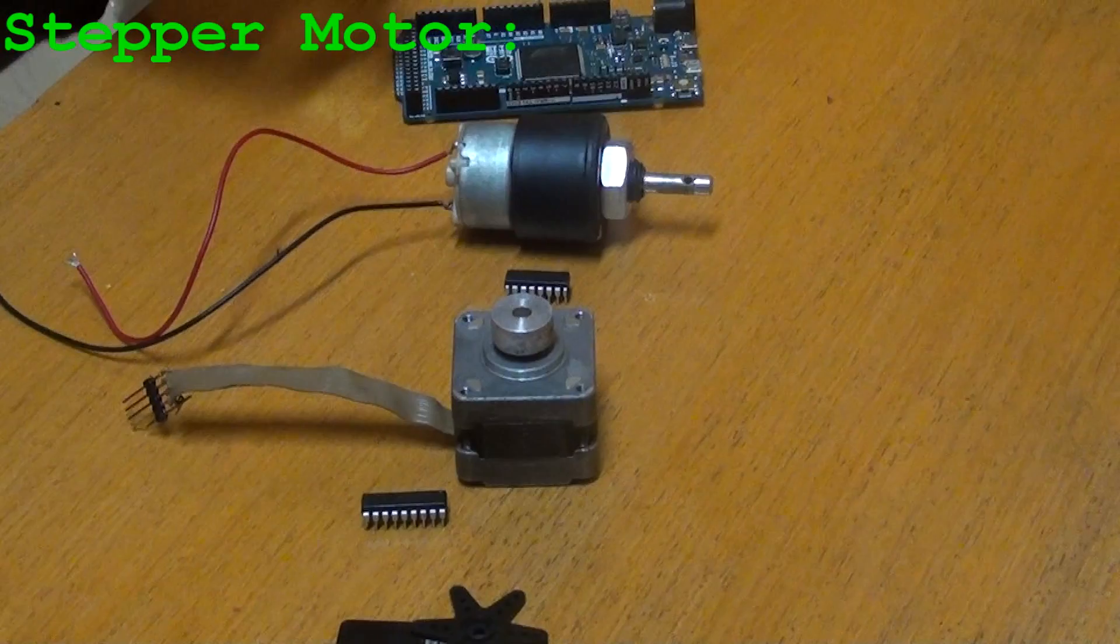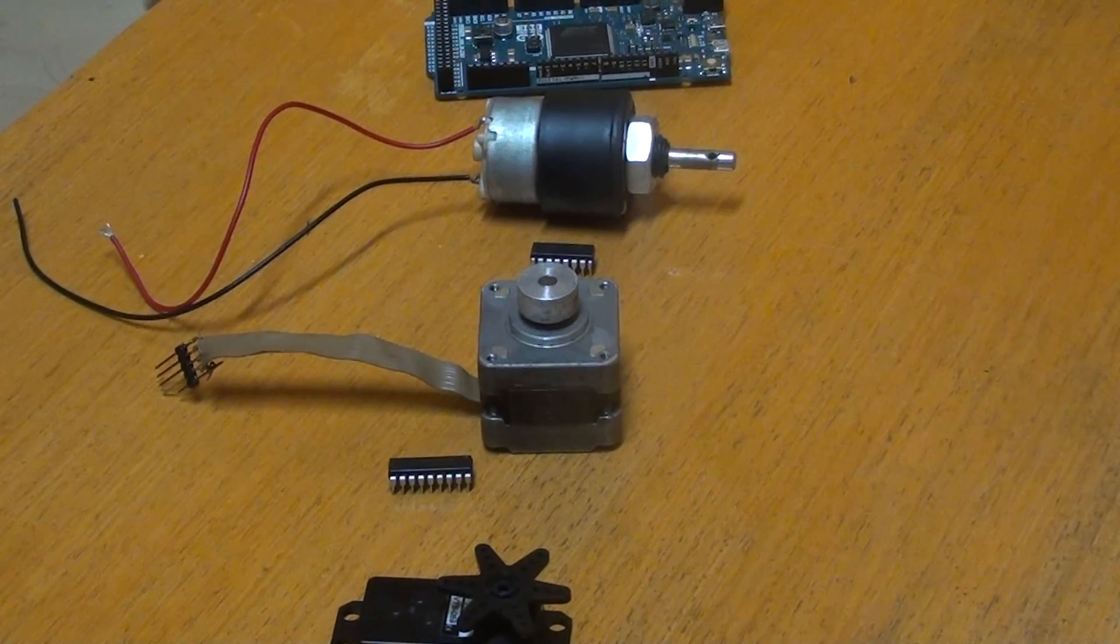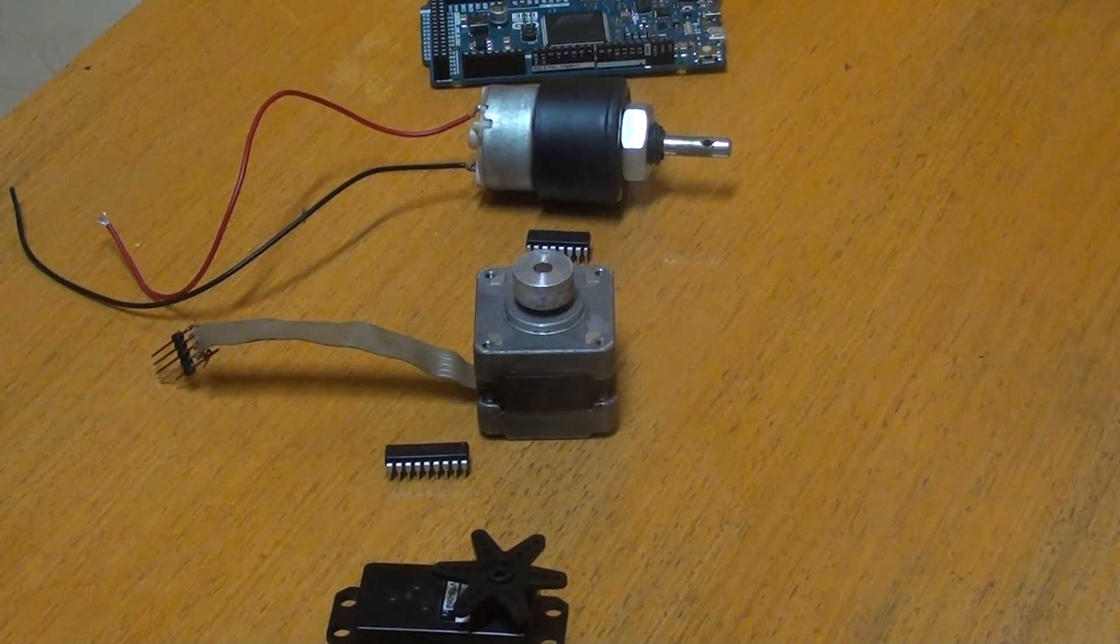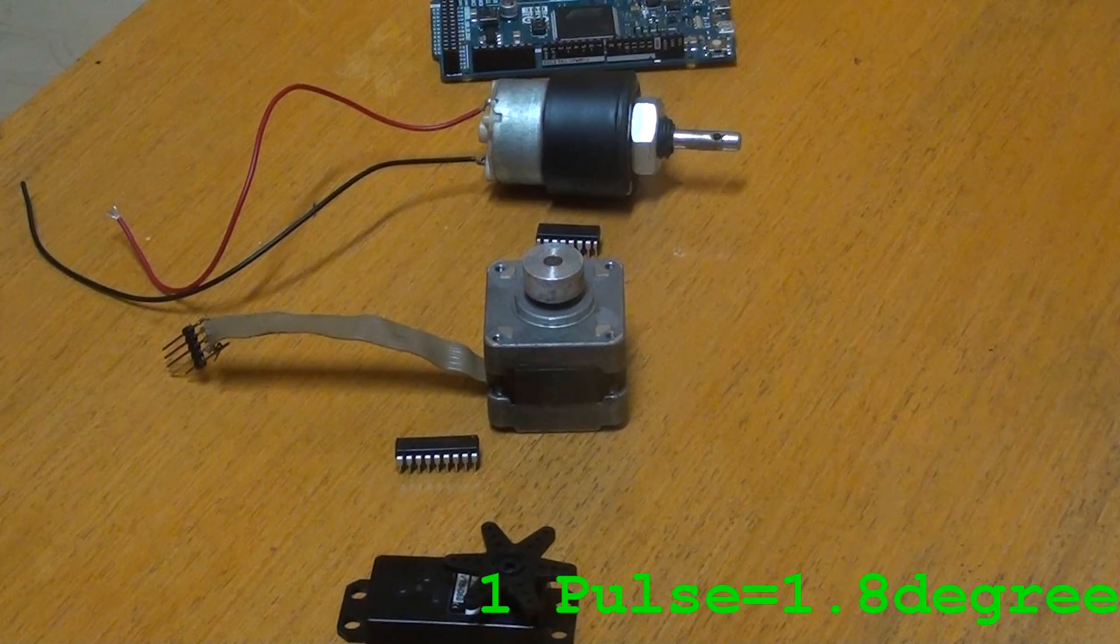Next we have the stepper motor, which will also be interfacing with this Arduino Doom. The stepper motor is a precise DC electrical motor that divides a full rotation into a number of equal steps. For every pulse, it moves the shaft 1.8 degrees.